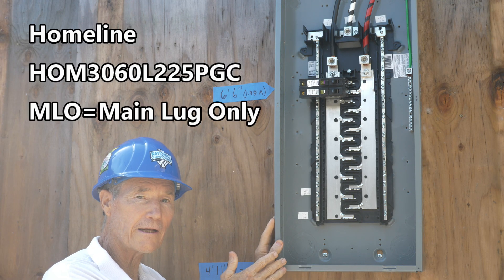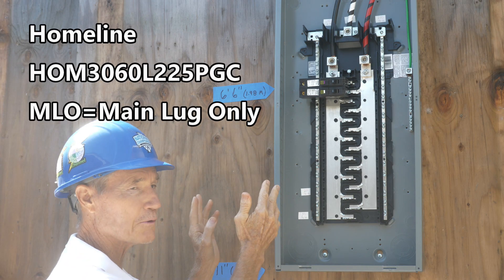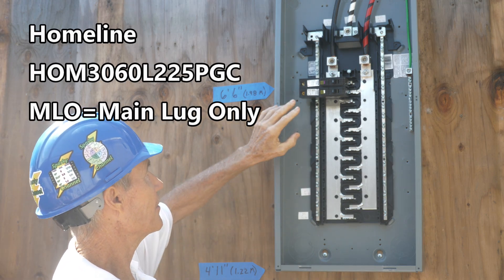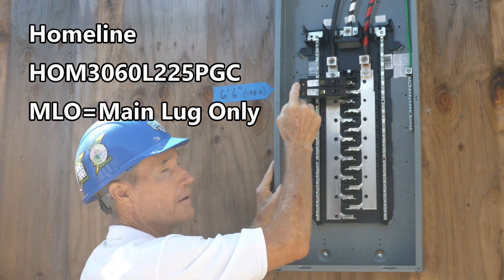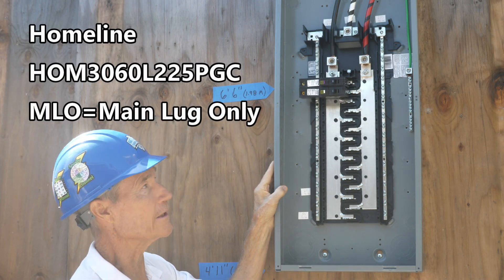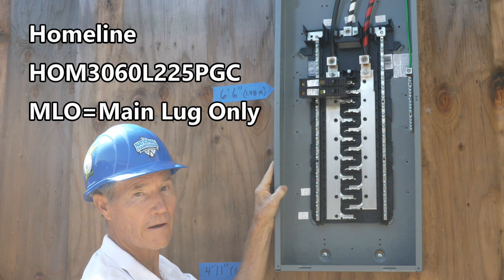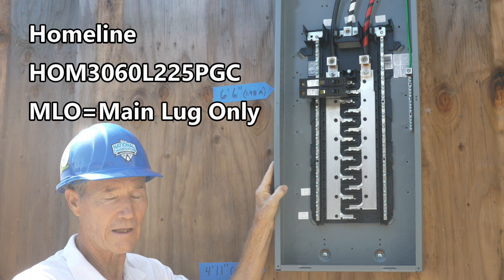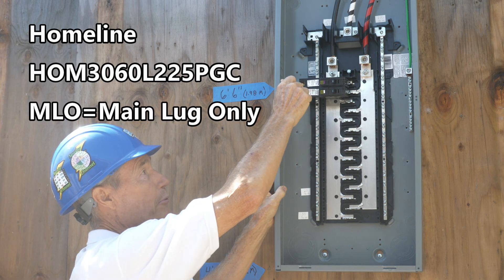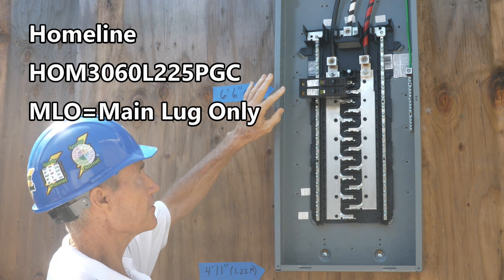So this is a Homeline MLO plug-on neutral panel. MLO means main lug only, there's the main lugs right there. What's important about that is there's no main breaker. See, this is your topmost breaker right here, that's gonna be important.